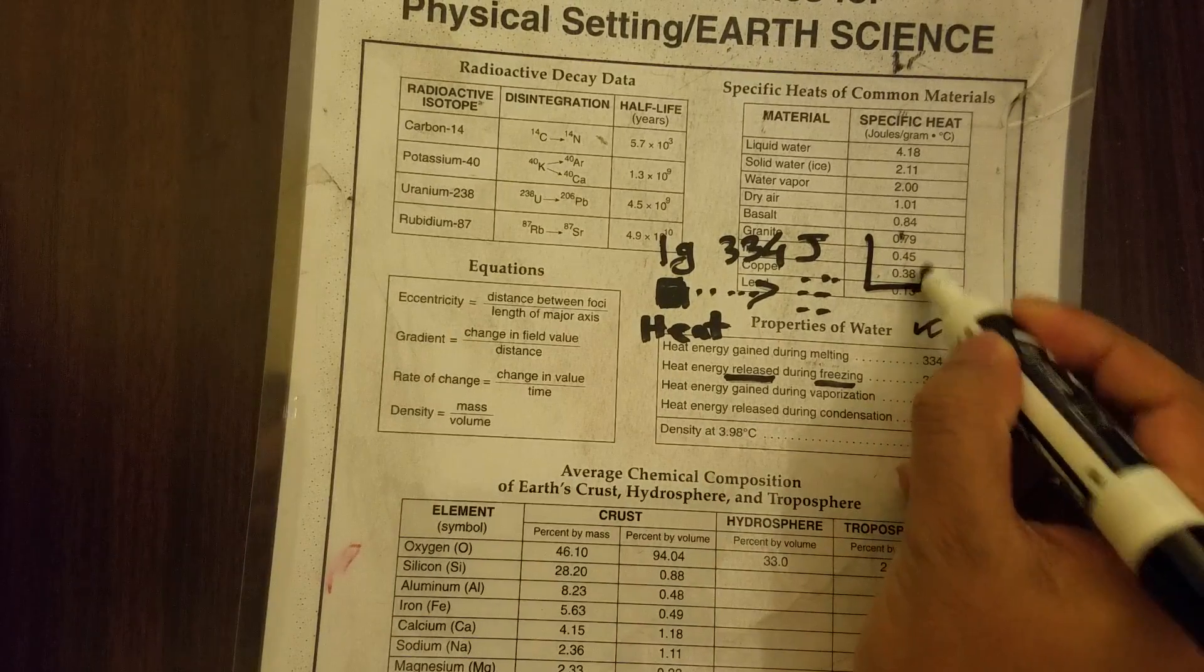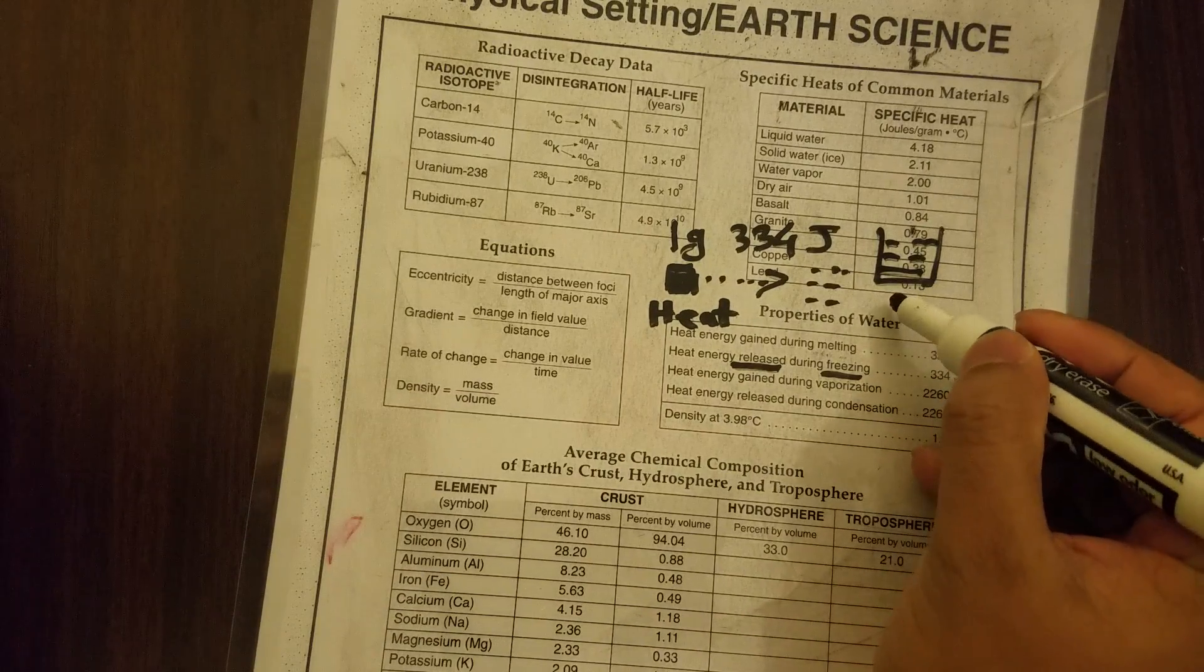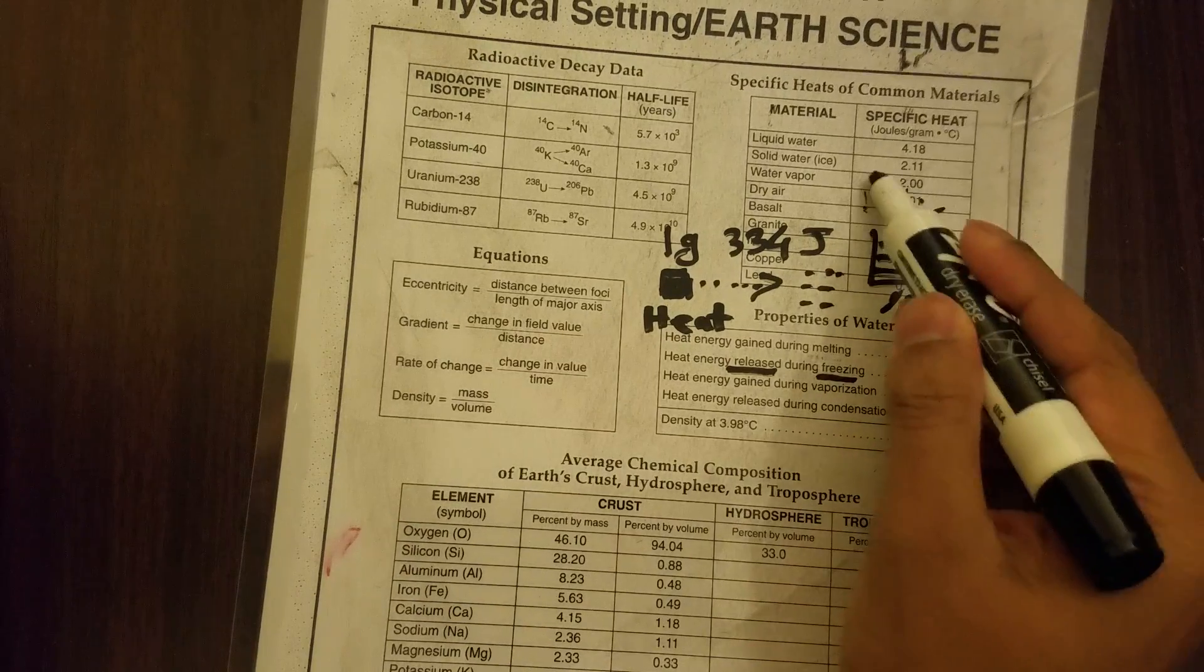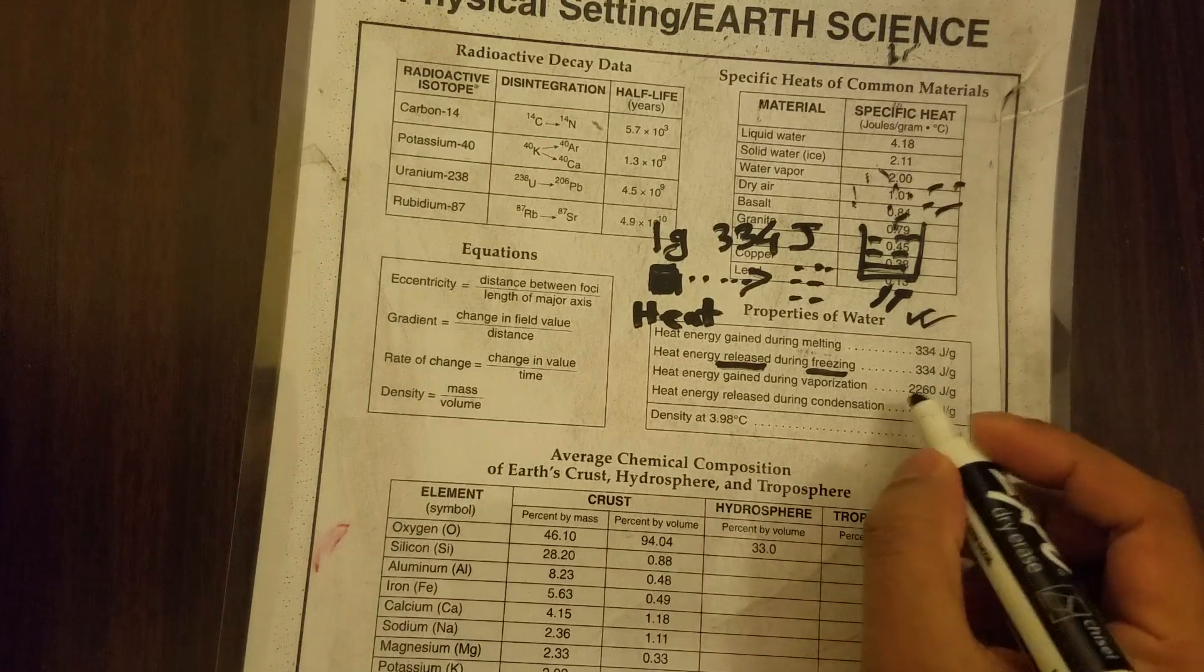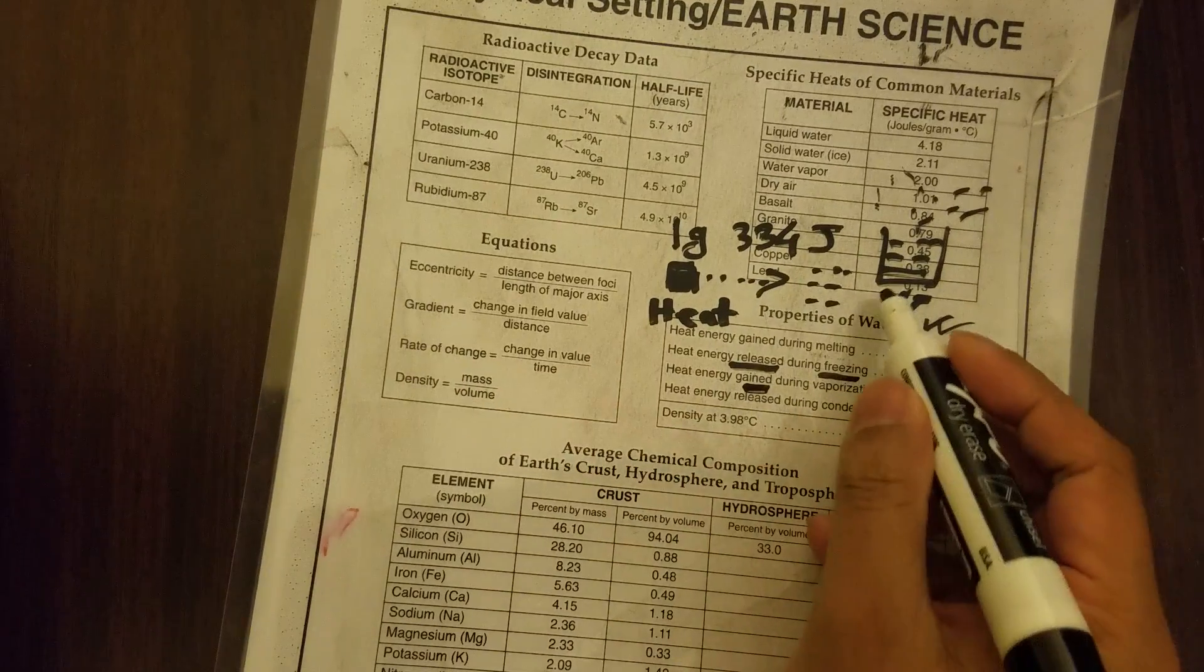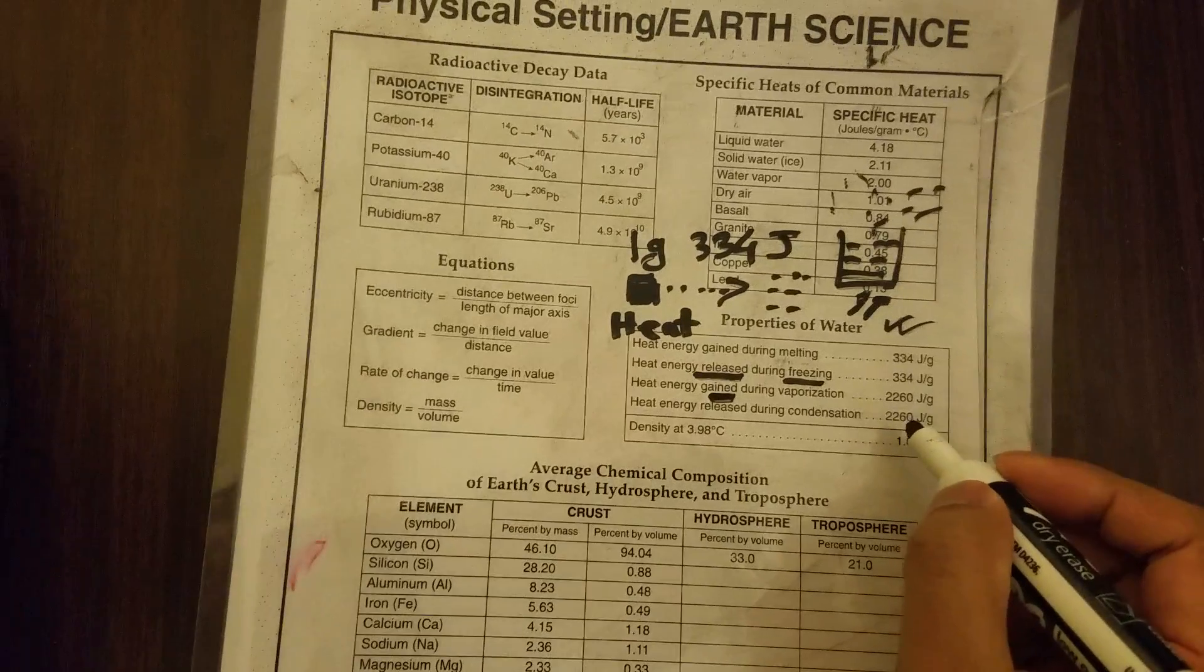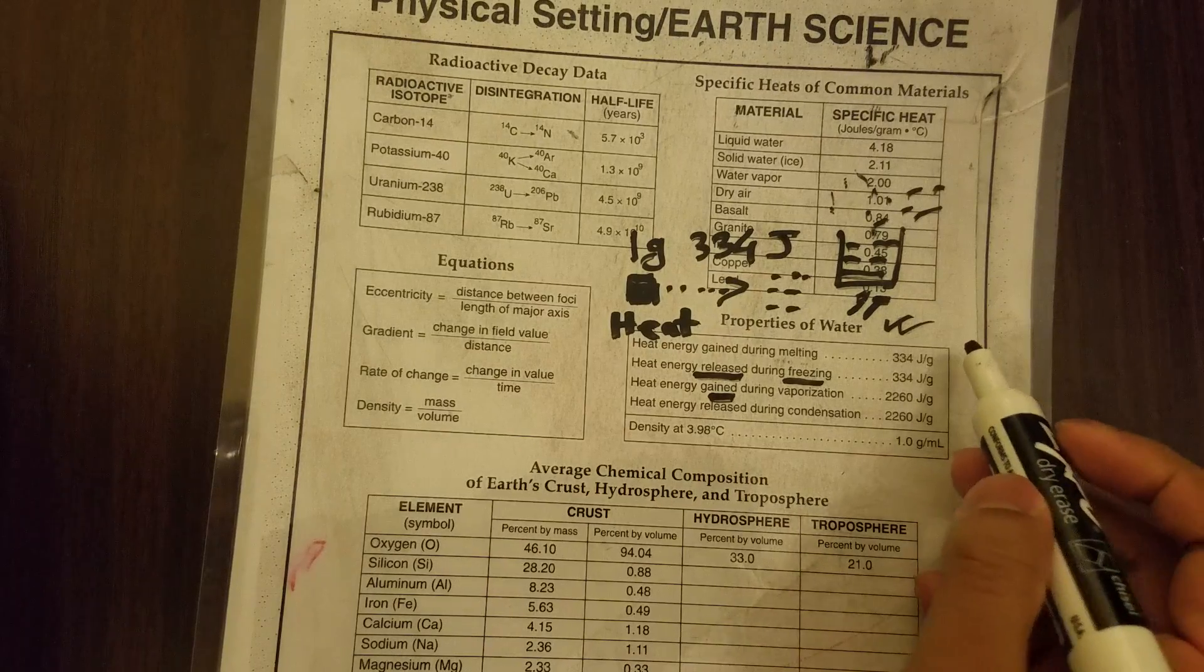Similarly, heat energy gained during vaporization. If you have a glass of water and you are heating this again, then the water will evaporate. That is vaporization and this time you are gaining this energy, 2260 joules for one gram.